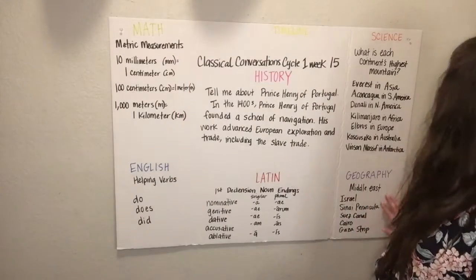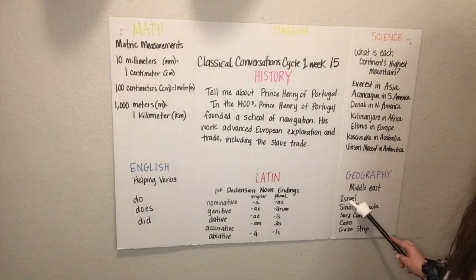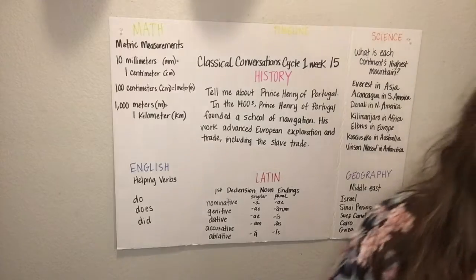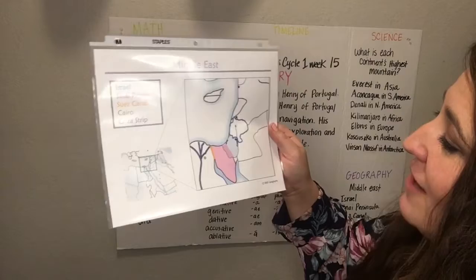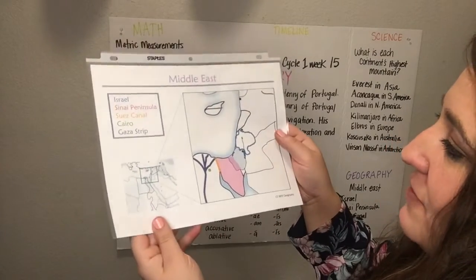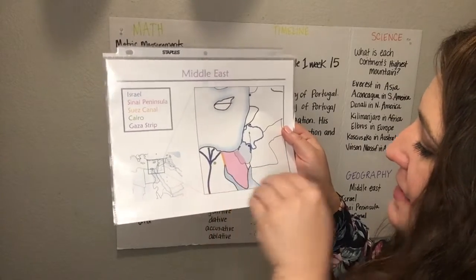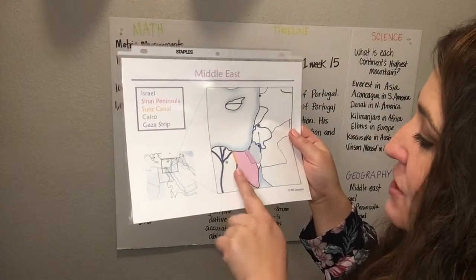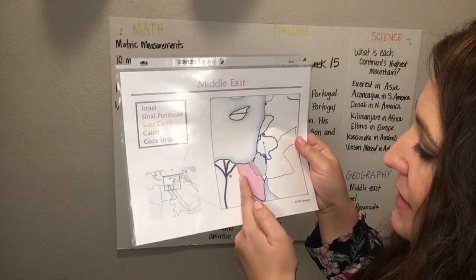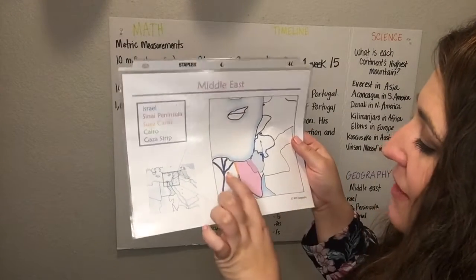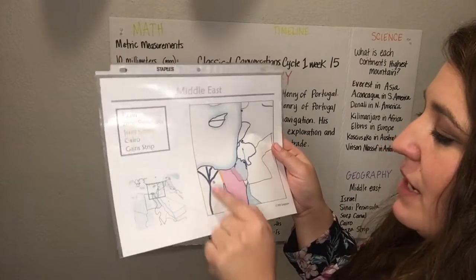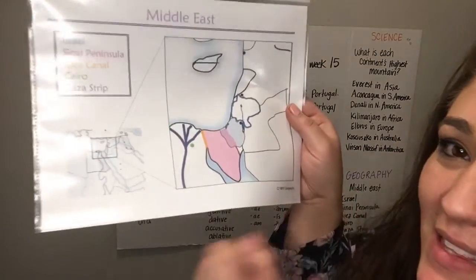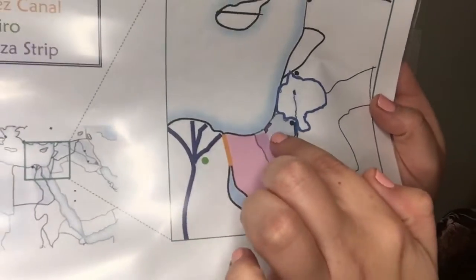Then we're going to our last thing, which is geography. Geography — we have the Middle East: Israel, Sinai Peninsula, Suez Canal, Cairo, and the Gaza Strip. I have a handy map to show you. Israel is in blue. The Sinai Peninsula is this pink area poking down onto the Red Sea. The Suez Canal connects the Red Sea to the Mediterranean Sea. Cairo has a little green dot, and then we have the Nile River going up. The Gaza Strip is this little purple area — it looks like a little jelly bean.